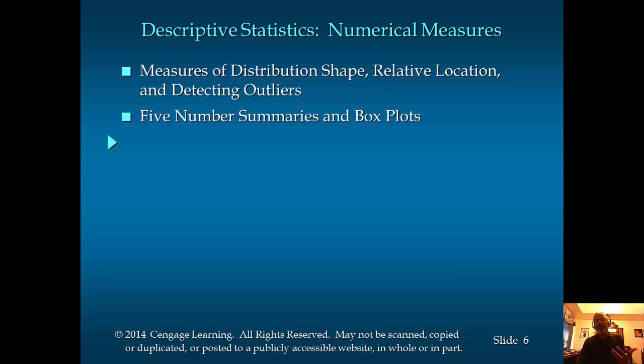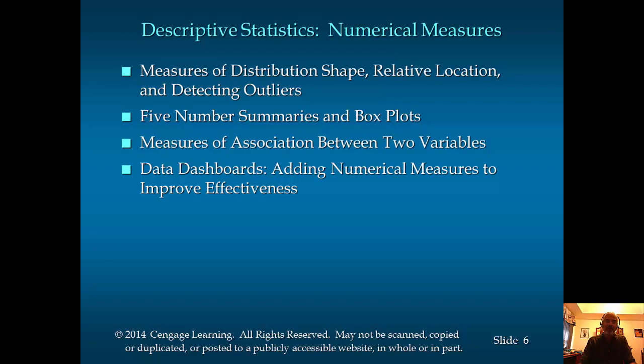There is what is called five-number summary, which goes with box plot. We have measures of association between two variables. So far we've been looking at just one variable, but if you have two numerical variables, are there measures we can compute to summarize the relationship? We have data dashboards to present these numerical summaries.